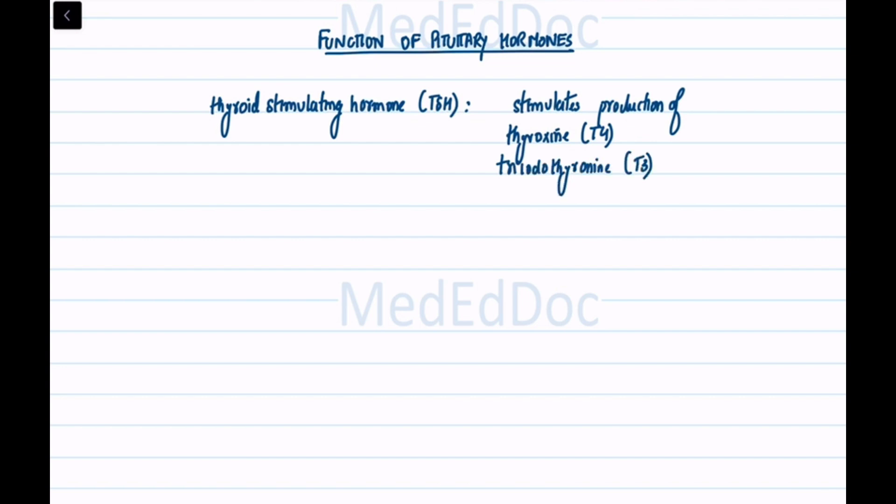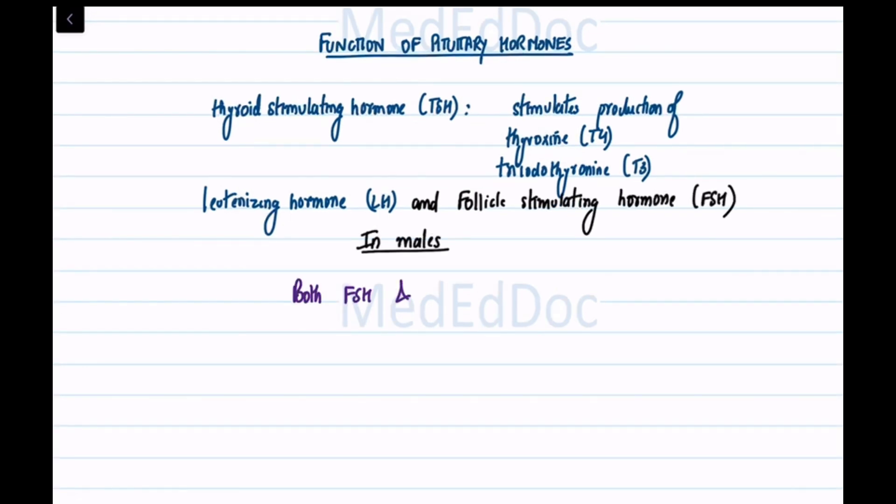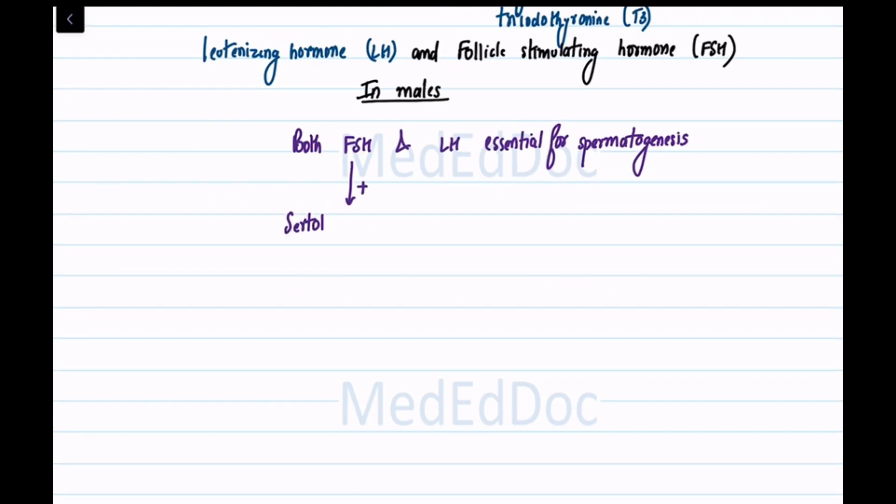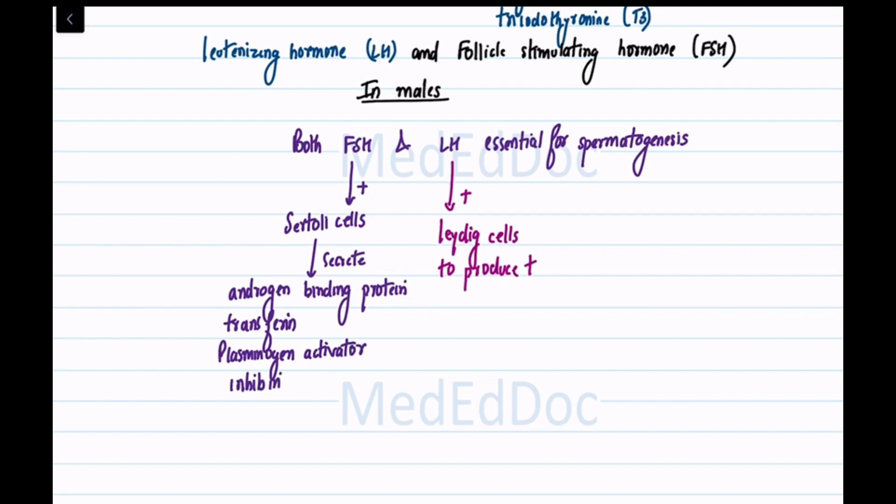Luteinizing hormone (LH) and follicle-stimulating hormone (FSH). In males, both FSH and LH are essential for spermatogenesis. FSH stimulates Sertoli cells to secrete androgen-binding protein (ABP), transferrin, plasminogen activator, and inhibin. LH stimulates Leydig cells to produce testosterone.